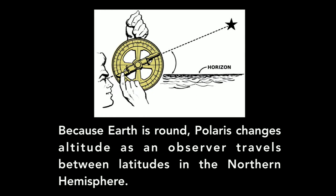So because Earth is round, Polaris changes its altitude as an observer travels between the latitudes in the Northern Hemisphere. So that's what early navigators would use.